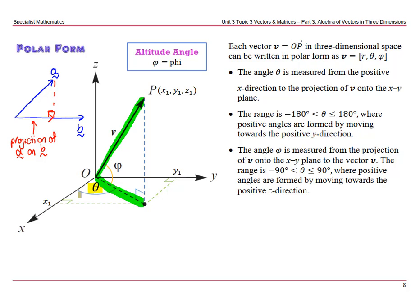The angle phi is measured from the projection of v on the xy plane to the vector v. So you can see phi here. That projection of v on the xy plane and phi is measured up to v. Think about it as the altitude angle or height.